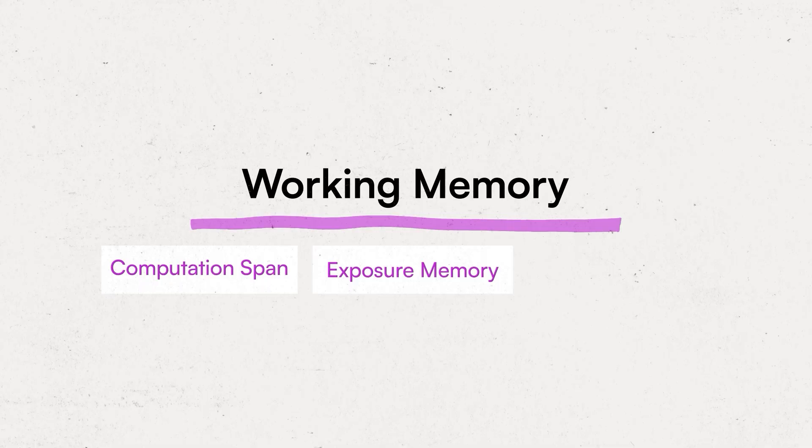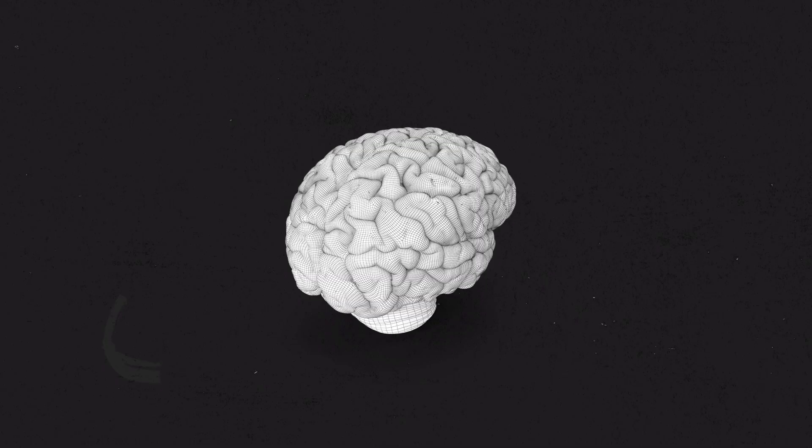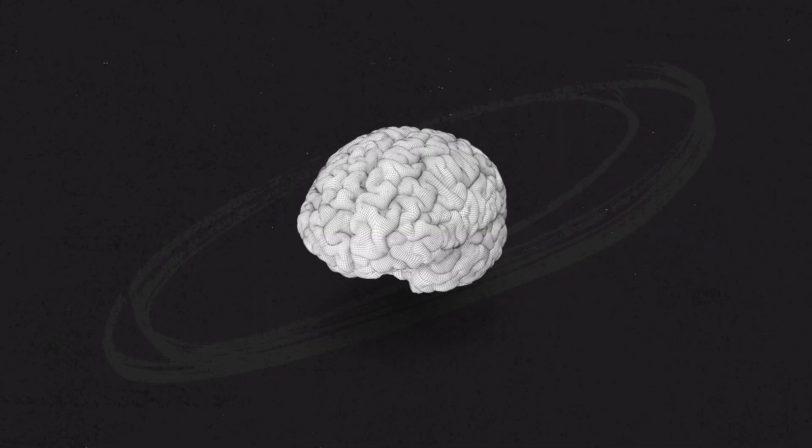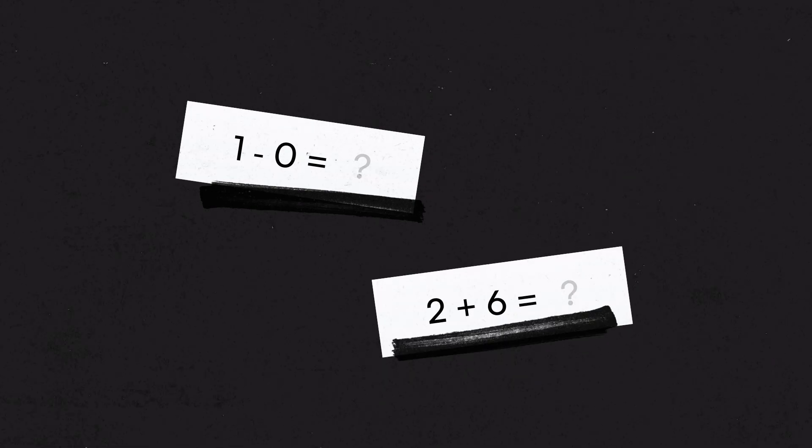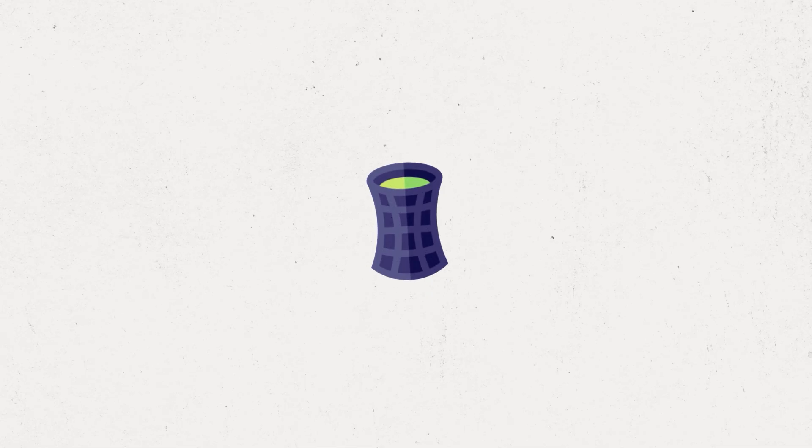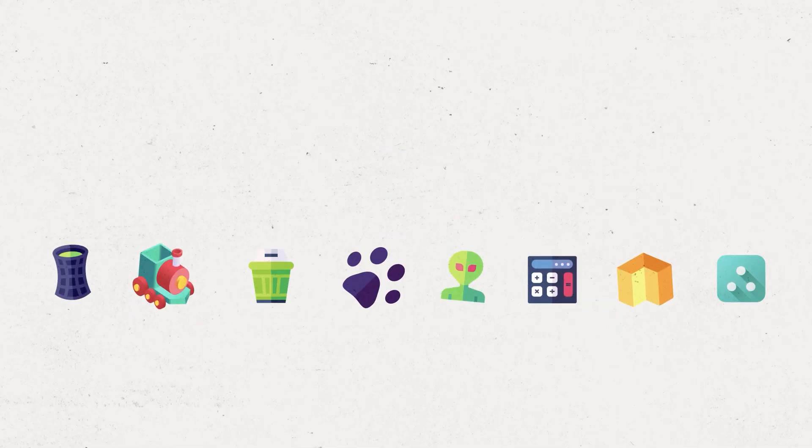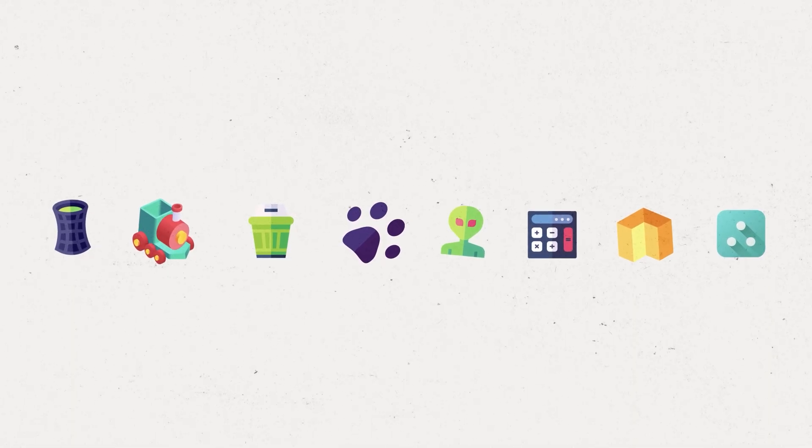The next index is the Working Memory Index, which consists of the Computation Span, Exposure Memory, and Visual Reversal subtests. These subtests all measure short-term memory. In the Computation Span subtest, examinees must complete a series of simple arithmetic problems and then immediately recall the answers. In the Exposure Memory subtest, a series of images are shown, each for one second. Afterward, eight images are shown. The examinee must identify which of those eight images also appeared in the first sequence.